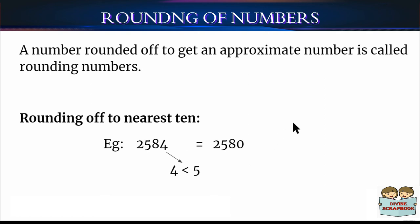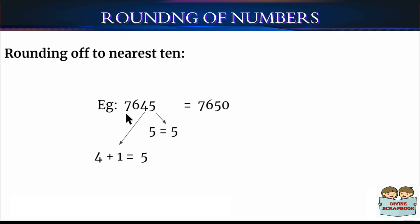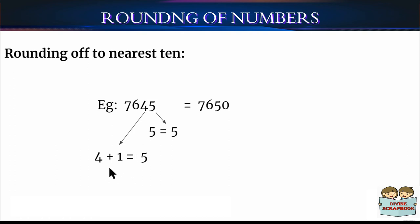Let's take one more example: 7,645. Here the digit at the 1's place is 5, and since 5 is equal to 5, we increase the 10's place by 1. So after rounding off to the nearest 10, it becomes 7,650.